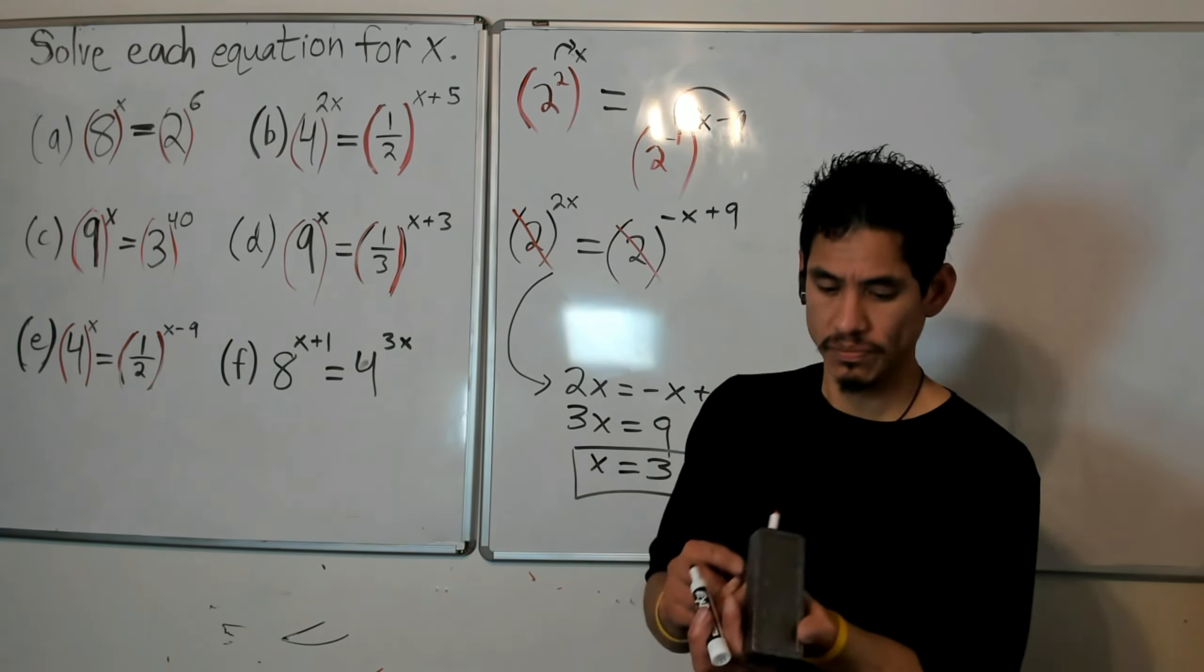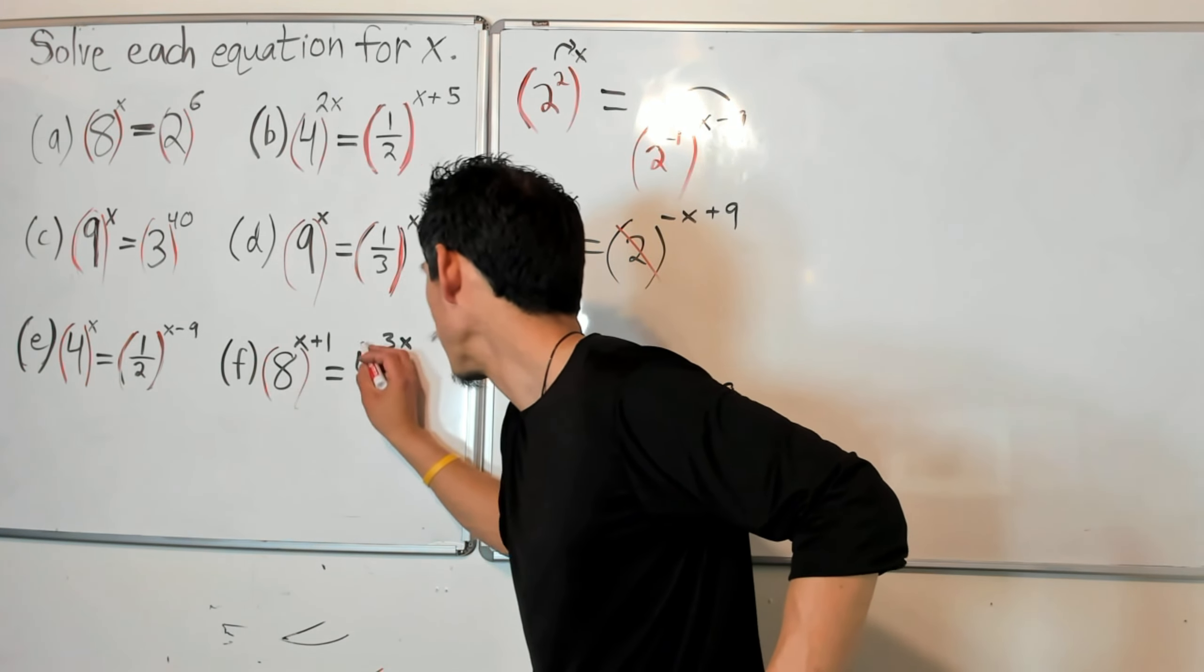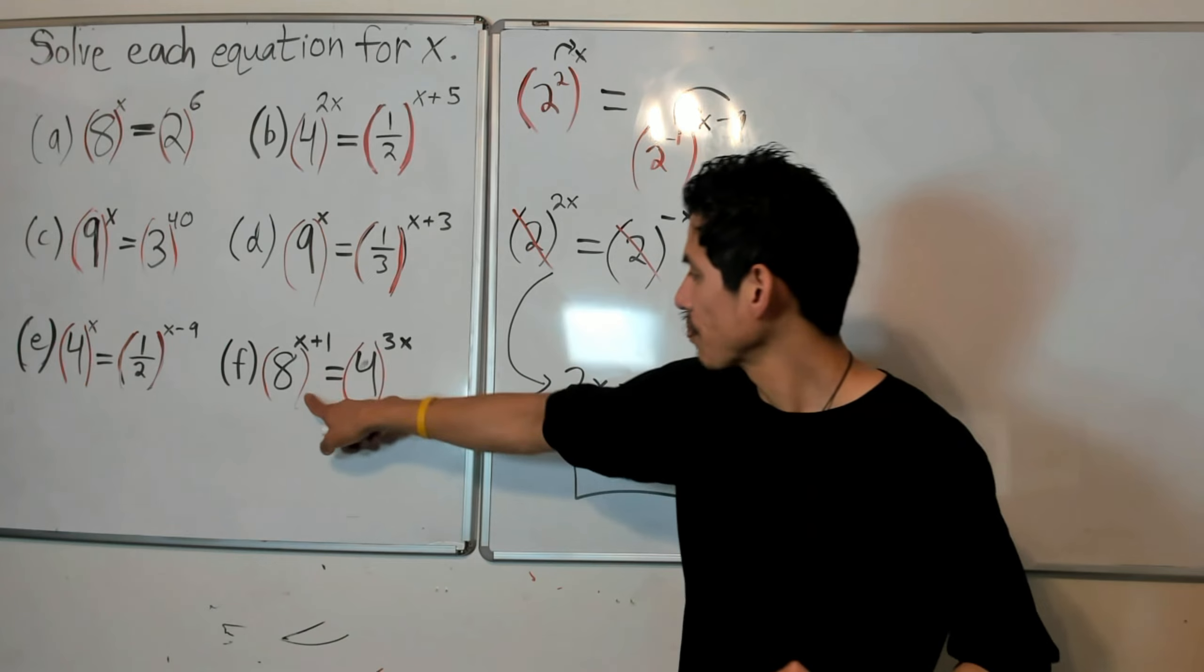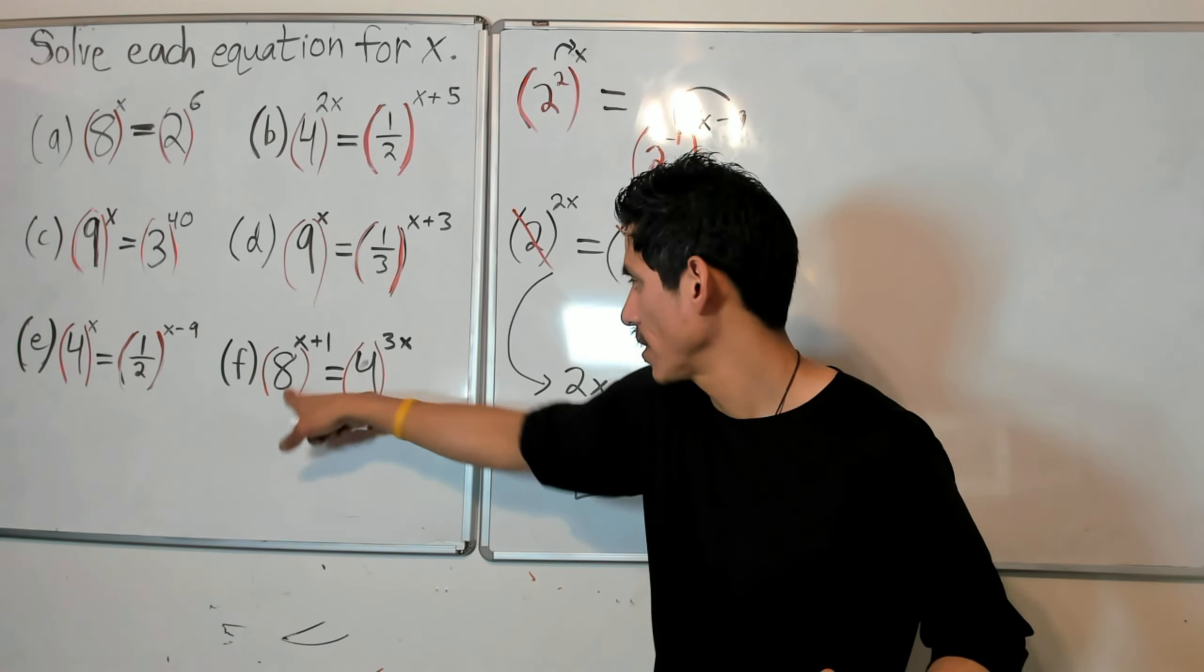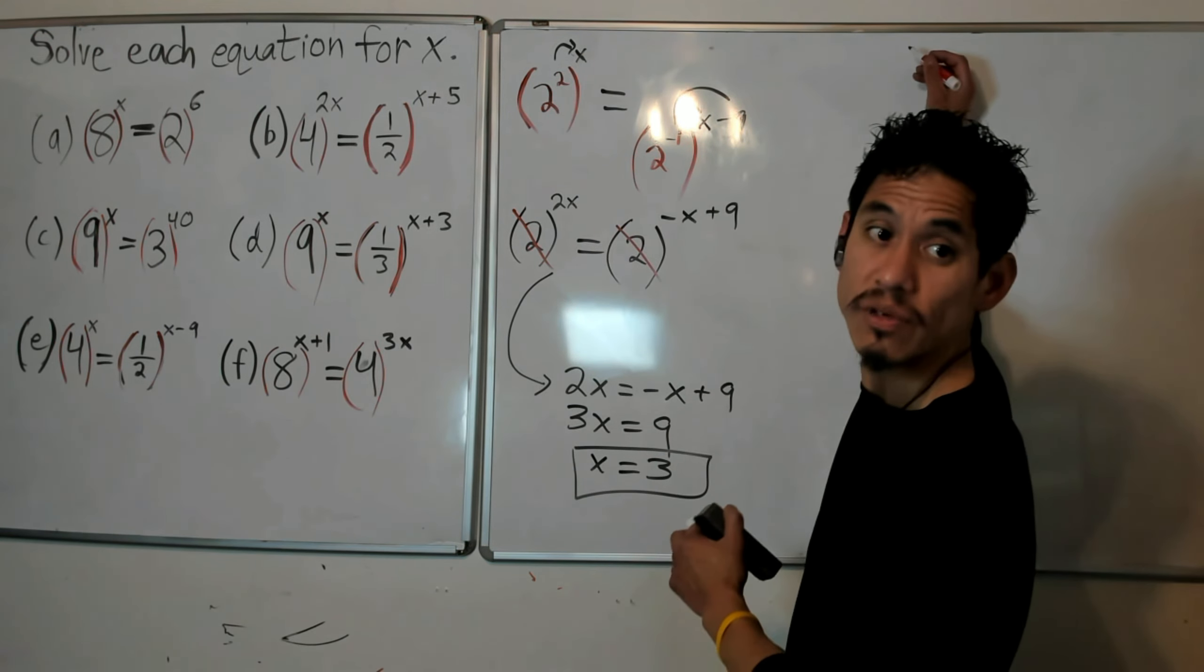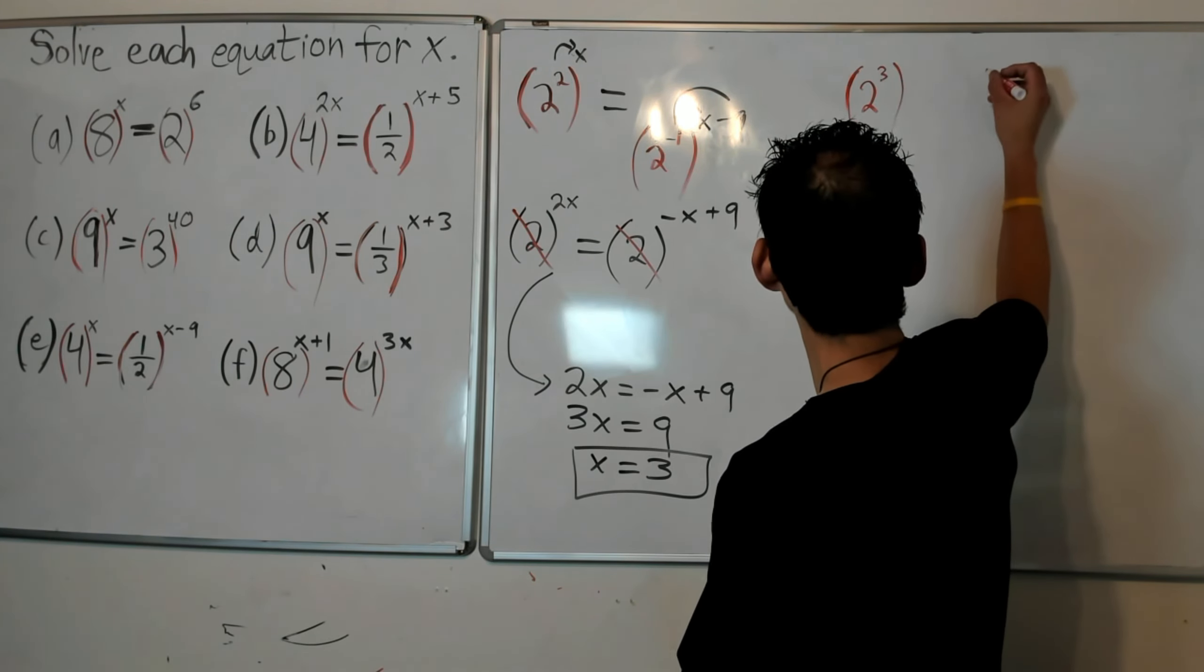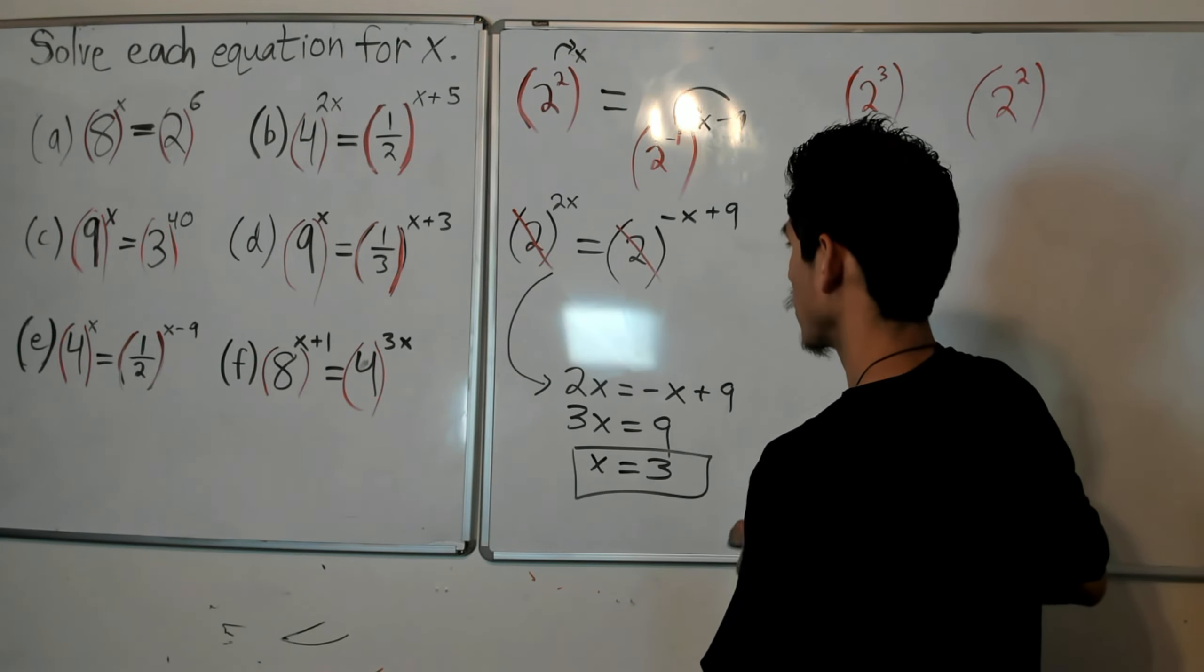Alright, last one for now. Bases are 8 and 4. They both can be written in terms of 2. So 8 is the same as 2 to the 3, 4 is the same as 2 squared. I'm going to rewrite this as 2 cubed and 2 squared.